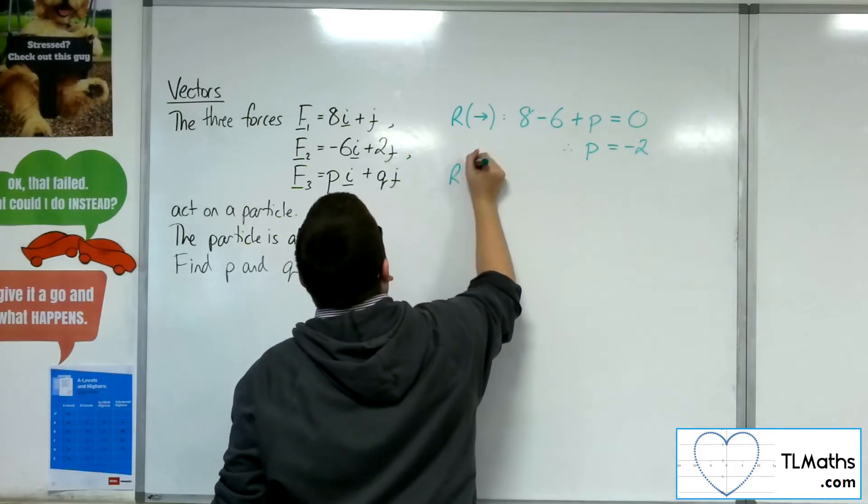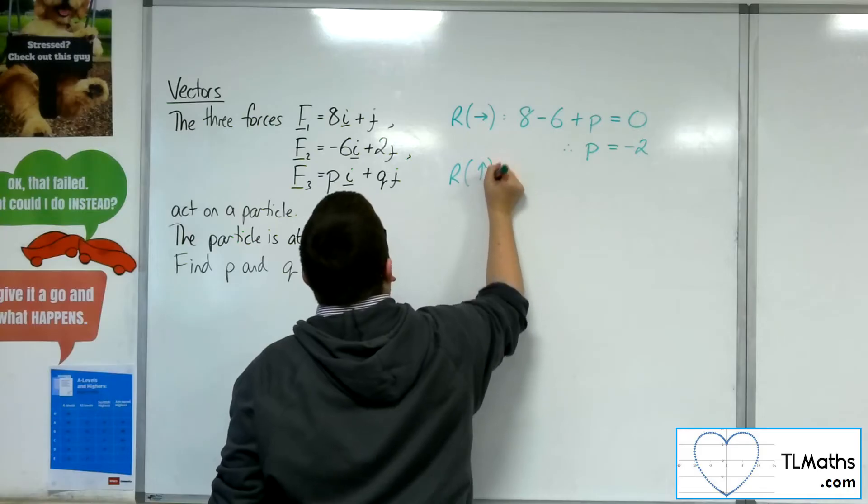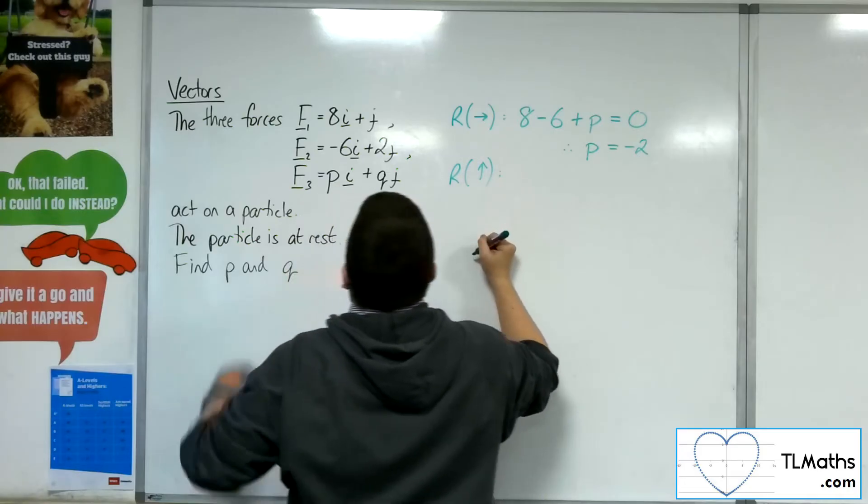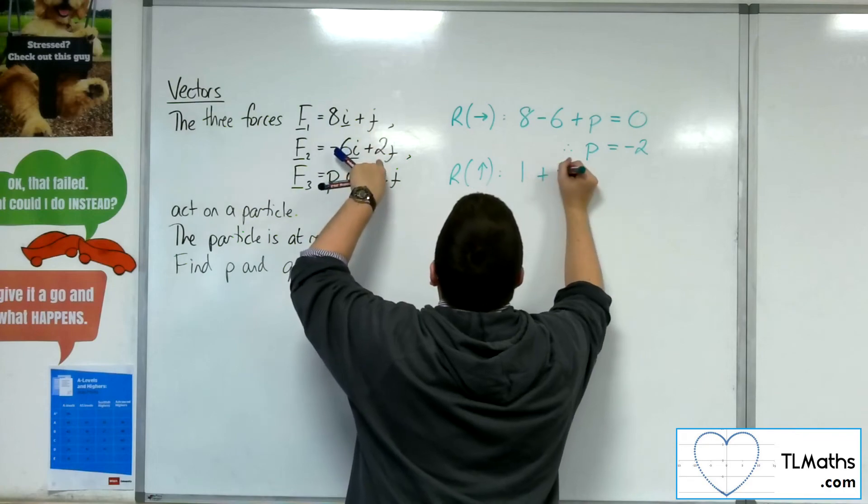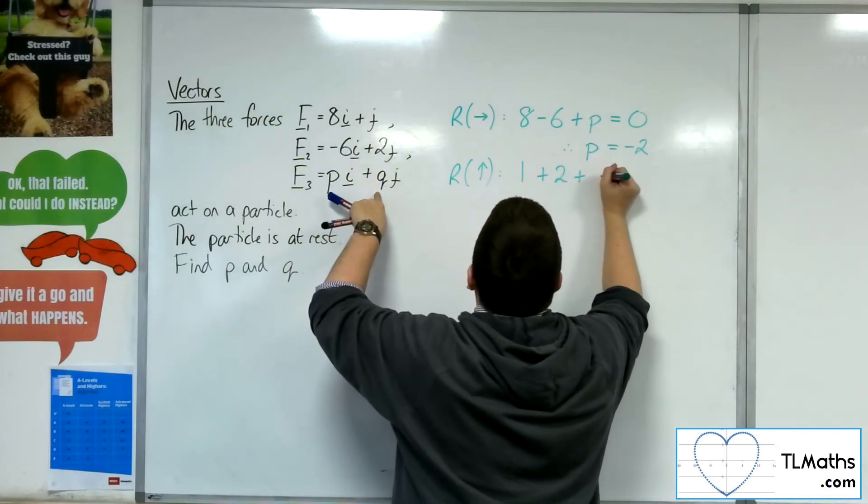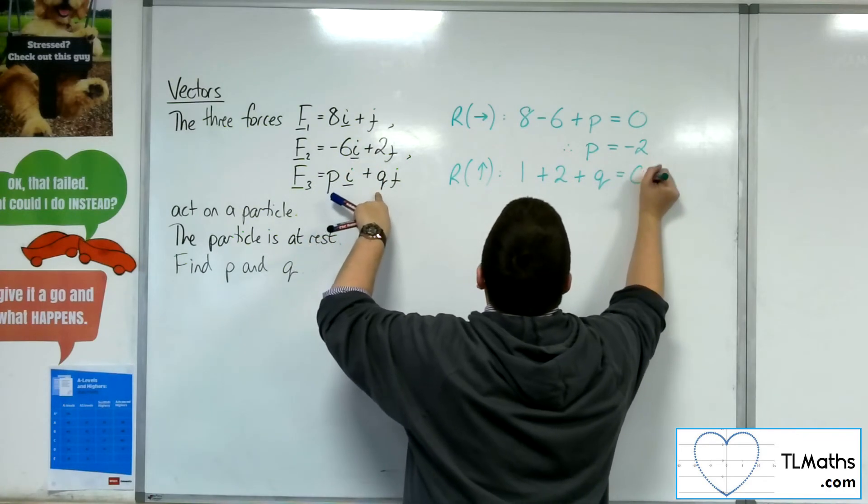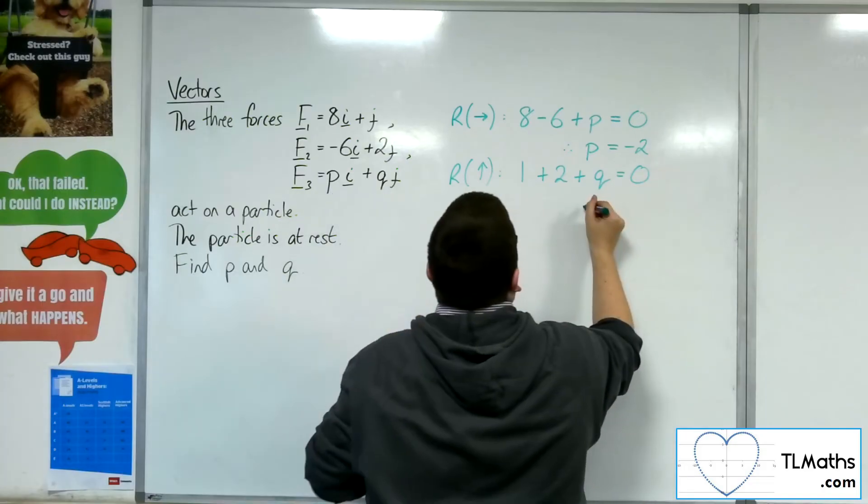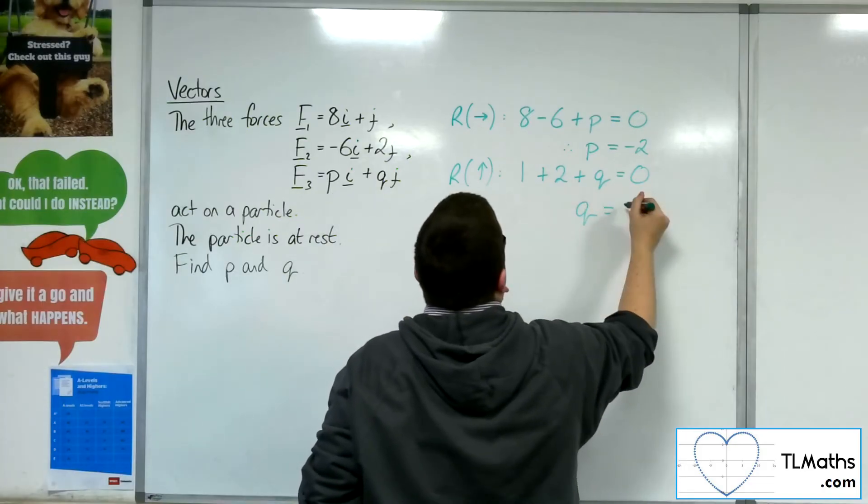And if I was to resolve this vertically, then I would have 1 plus 2 plus q must be equal to 0. And so q would have to be minus 3.